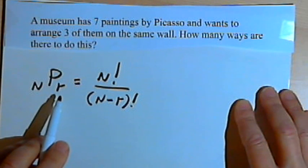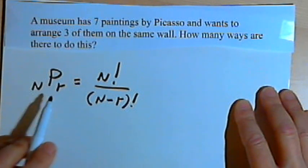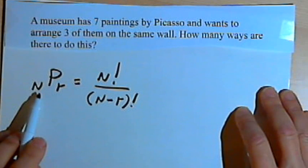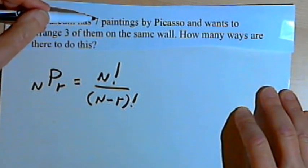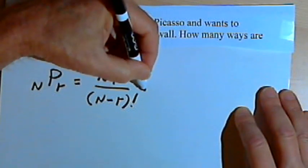Which allows us to take just some of the paintings and not all of them. Now the N is going to stand for the total number of elements in the set we're dealing with. The set is the seven paintings. So N is the same as 7.